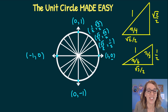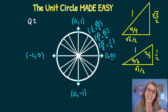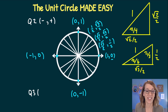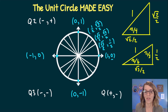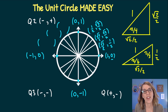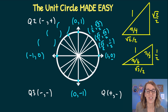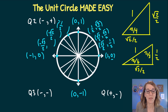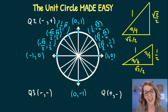The signs vary by quadrant: in quadrant two, x values are negative and y values are positive; in quadrant three, both are negative; in quadrant four, x is positive and y is negative. Using these signs, I label the x values from 0 to negative one: negative one-half, negative radical two over two, negative radical three over two, then counting back up with positive values. The same pattern applies in all four quadrants.